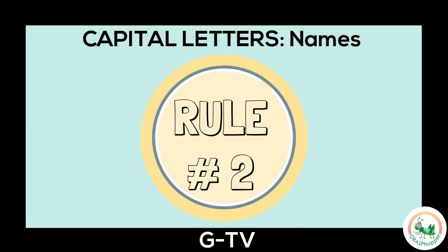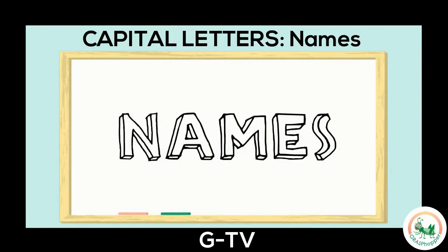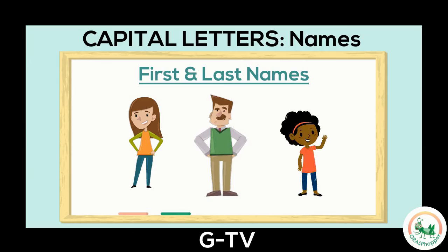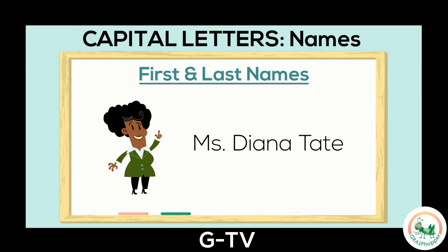Rule number two: write a capital for names. Whenever we write a person's name, the first letter must be capitalized. This lets a reader know they are reading about a specific person. For the name Ms. Diana Tate, the M is capitalized for the prefix Ms., the D is capitalized for the first name Diana, and the T is capitalized for the last name Tate.